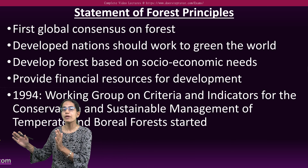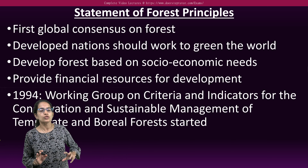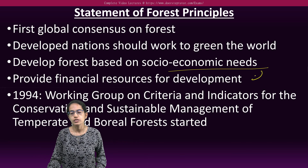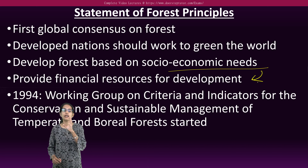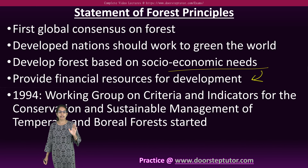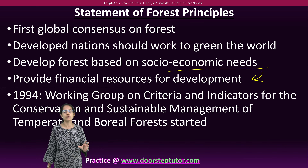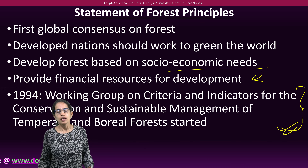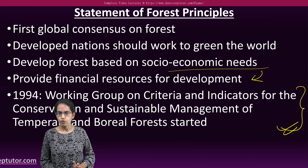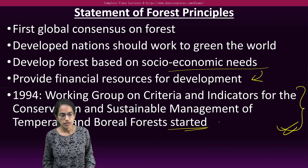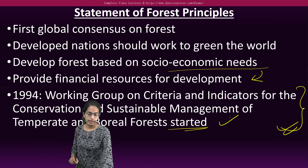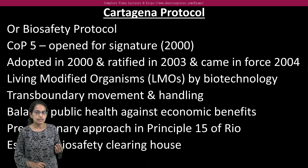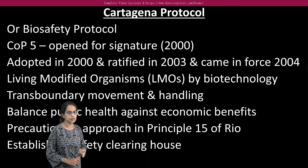The Statement of Forest Principles was the first global consensus on forests and how developed nations should work to maintain the green environment — specifically how forests can be developed based on socioeconomic needs and how they can help with financial needs. In 1994, a working group on criteria and indicators for conserving and managing temperate and boreal forests was established, which was a major initiative.